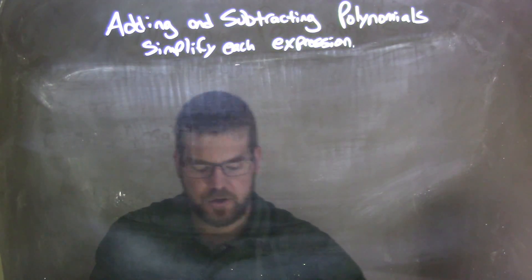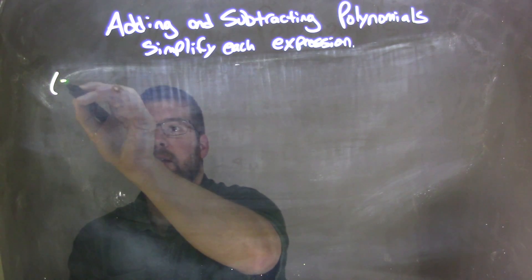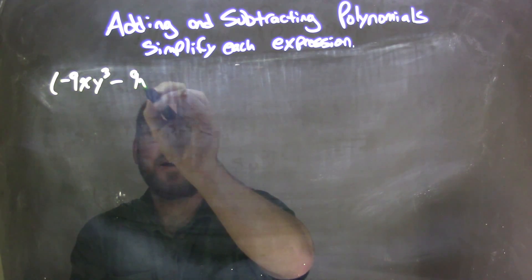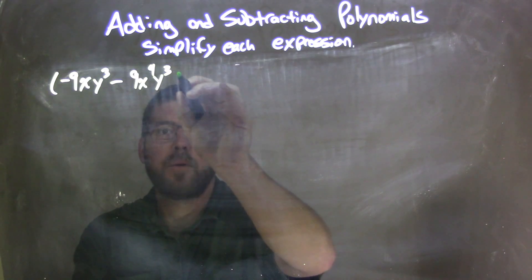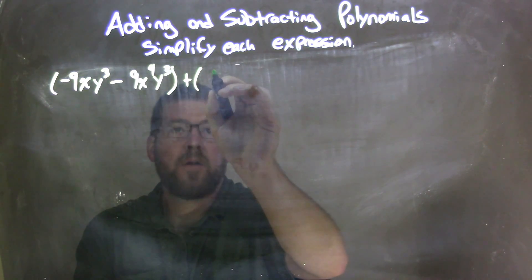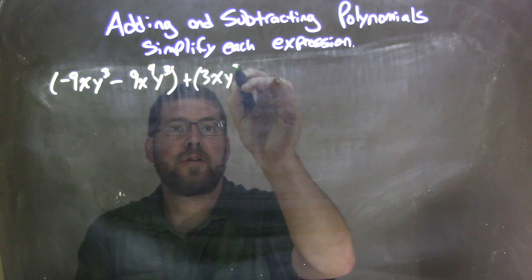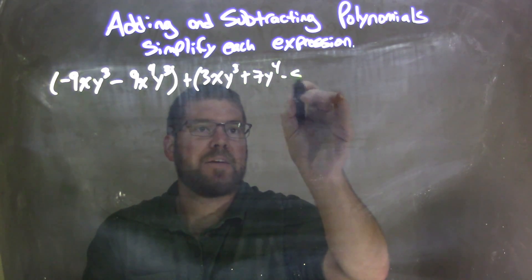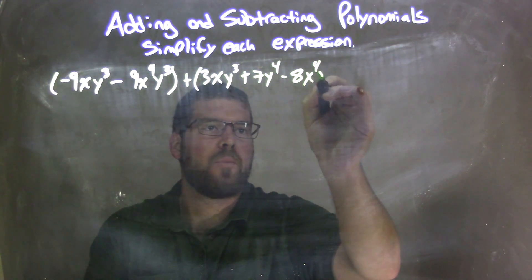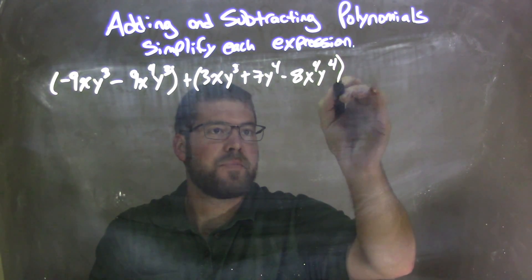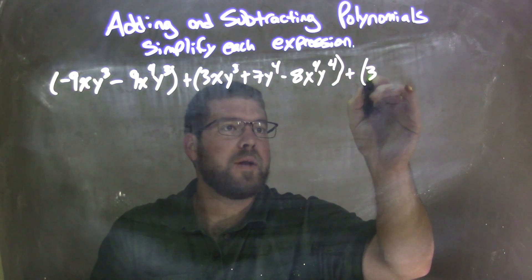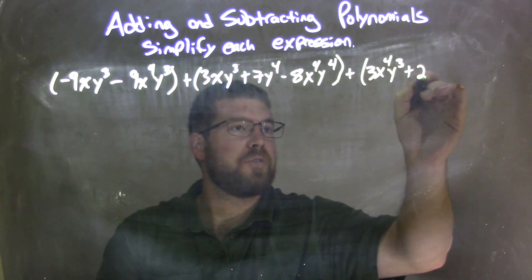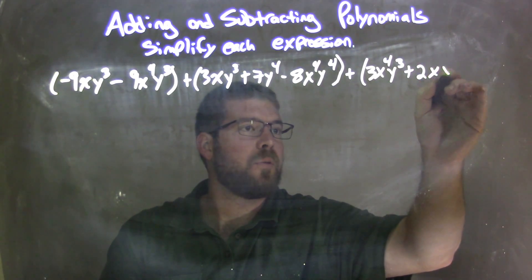So if I was given this polynomial: negative 9xy to the third, minus 9x to the fourth y to the third, in parenthesis 1, plus next parenthesis 3xy to the third plus 7y to the fourth minus 8x to the fourth y to the fourth, plus my last parenthesis 3x to the fourth y to the third plus 2xy to the third.